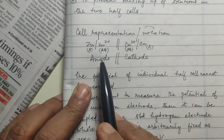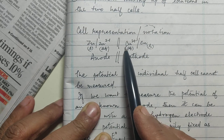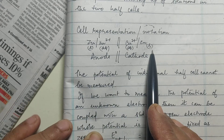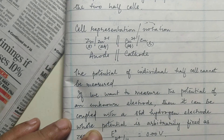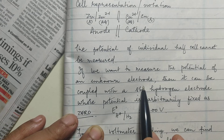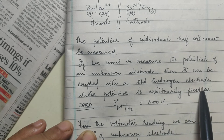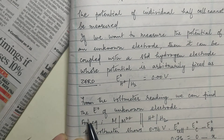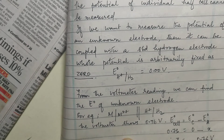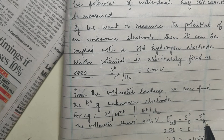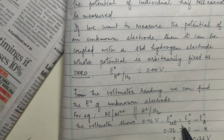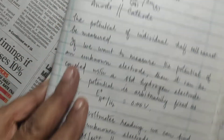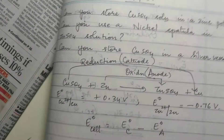Cell representation is written as: anode | salt bridge | cathode. The potential of an individual half cell cannot be measured alone. To measure the potential of an unknown electrode, it is coupled with a standard hydrogen electrode (SHE), whose potential is arbitrarily fixed as zero (H⁺/H₂ = 0). From the voltmeter reading, E° of the unknown electrode is calculated using: E°cell = E°cathode − E°anode. Since E°(SHE) = 0, the reading directly gives the unknown E° value.